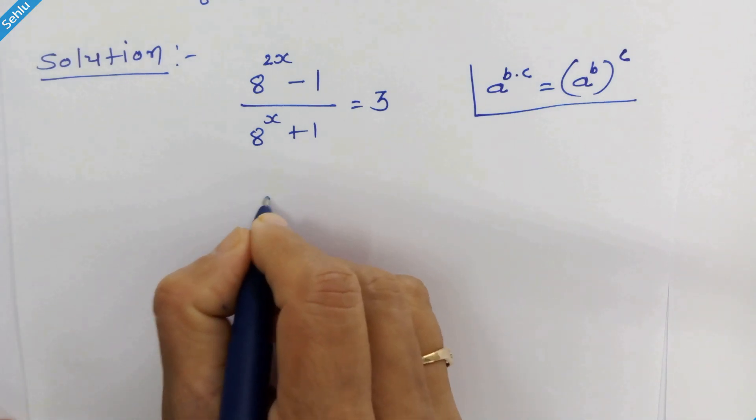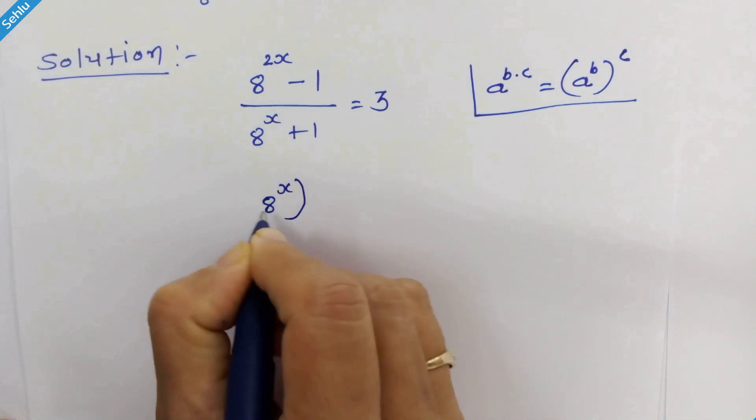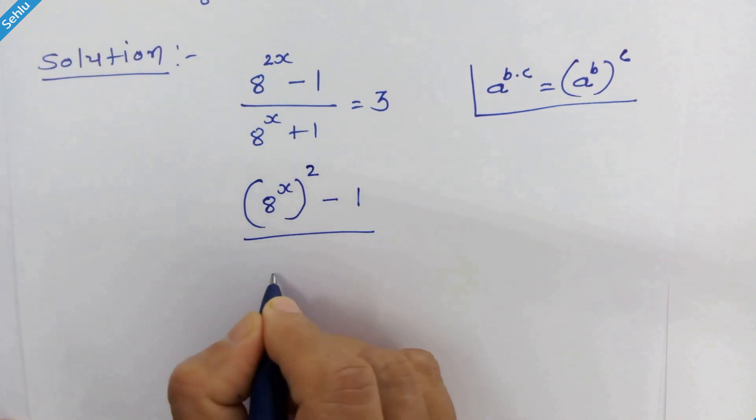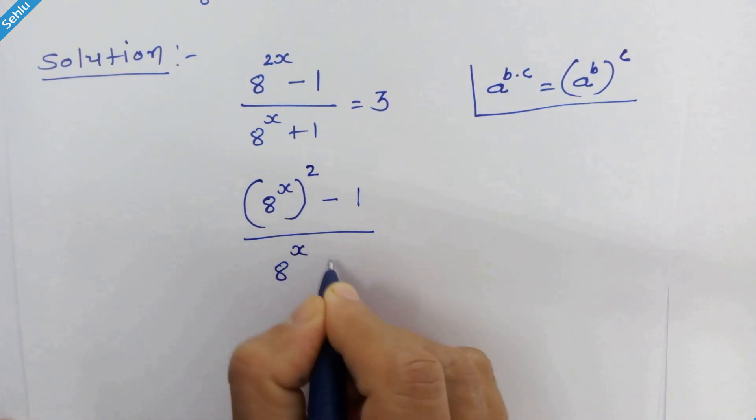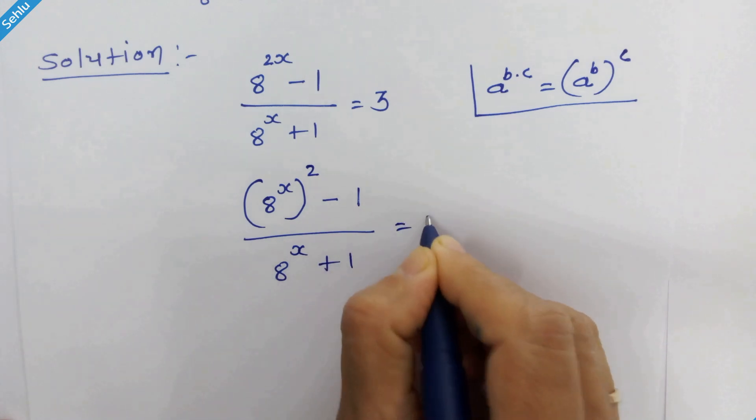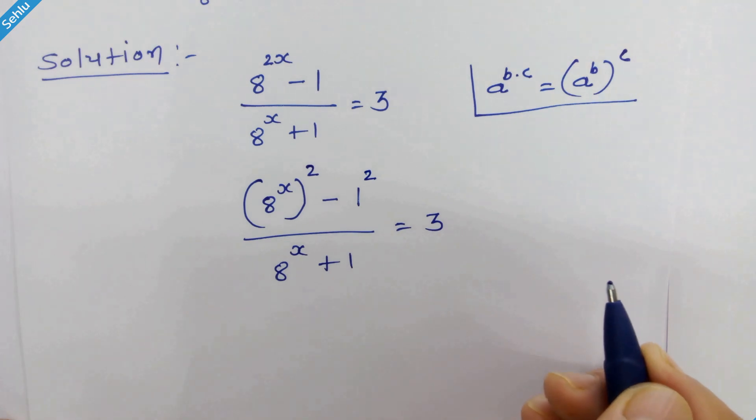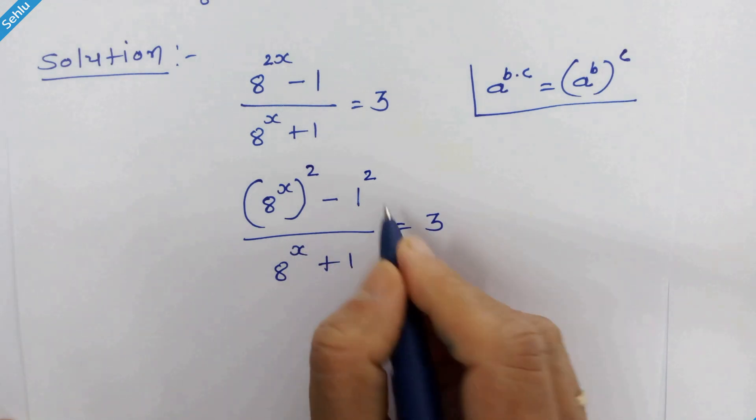So it will be 8 raised to x whole square minus 1 upon 8 raised to x plus 1 is equal to 3. We can write 1 square in place of 1, and this is the difference of the square.